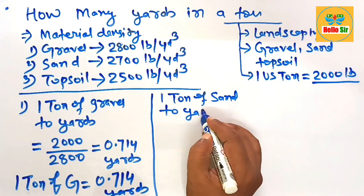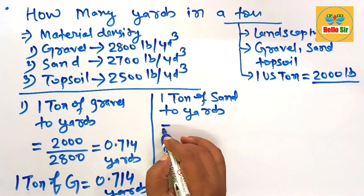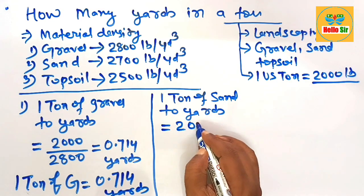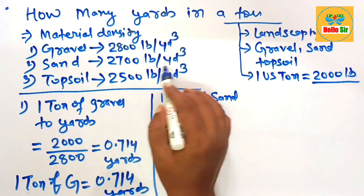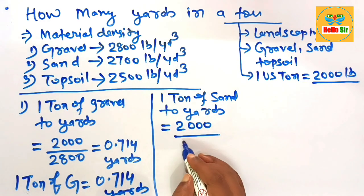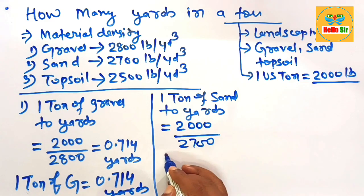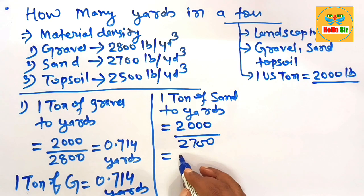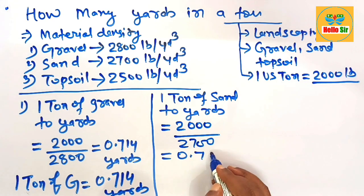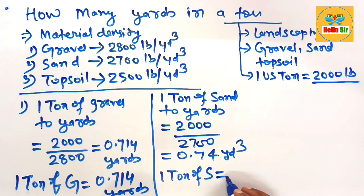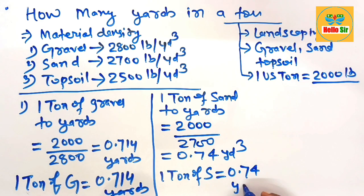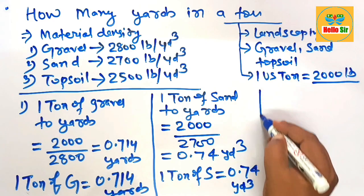Now convert one ton of sand to yards: divide one ton — that is two thousand pounds — by the one-yard sand weight, which is twenty-seven hundred. After division, this comes to about 0.74 cubic yards. One ton of sand is equal to 0.74 cubic yards.